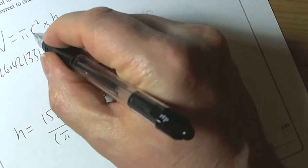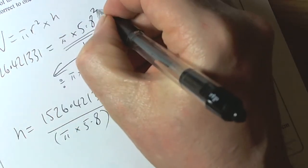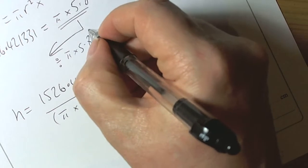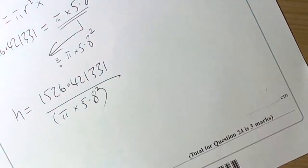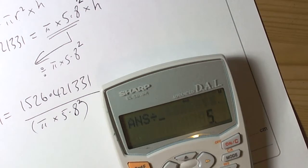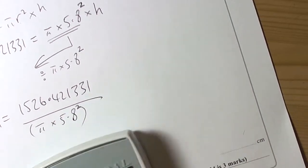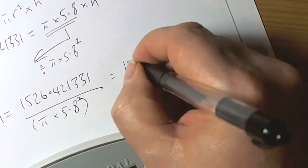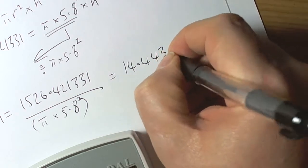It's because it says πr². And you need to be squaring the 5.8. So we divide by 5.8 squared there. So if I just divide by another 5.8 then that gives us the correct answer of 14.443.